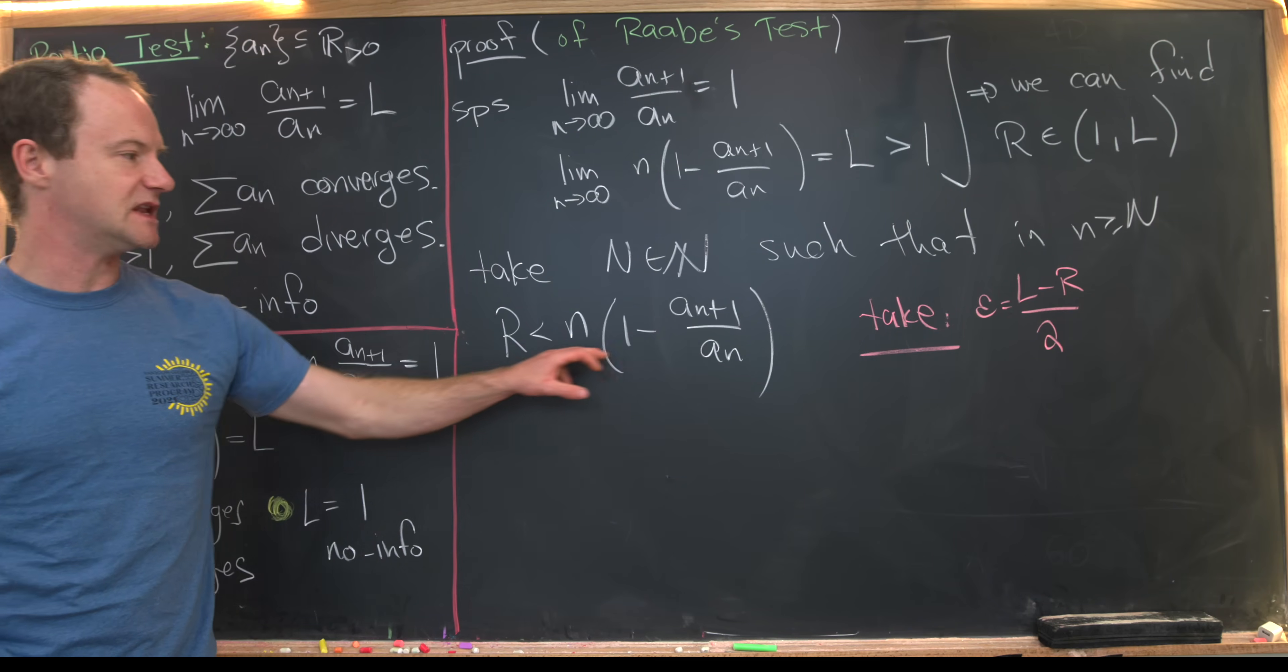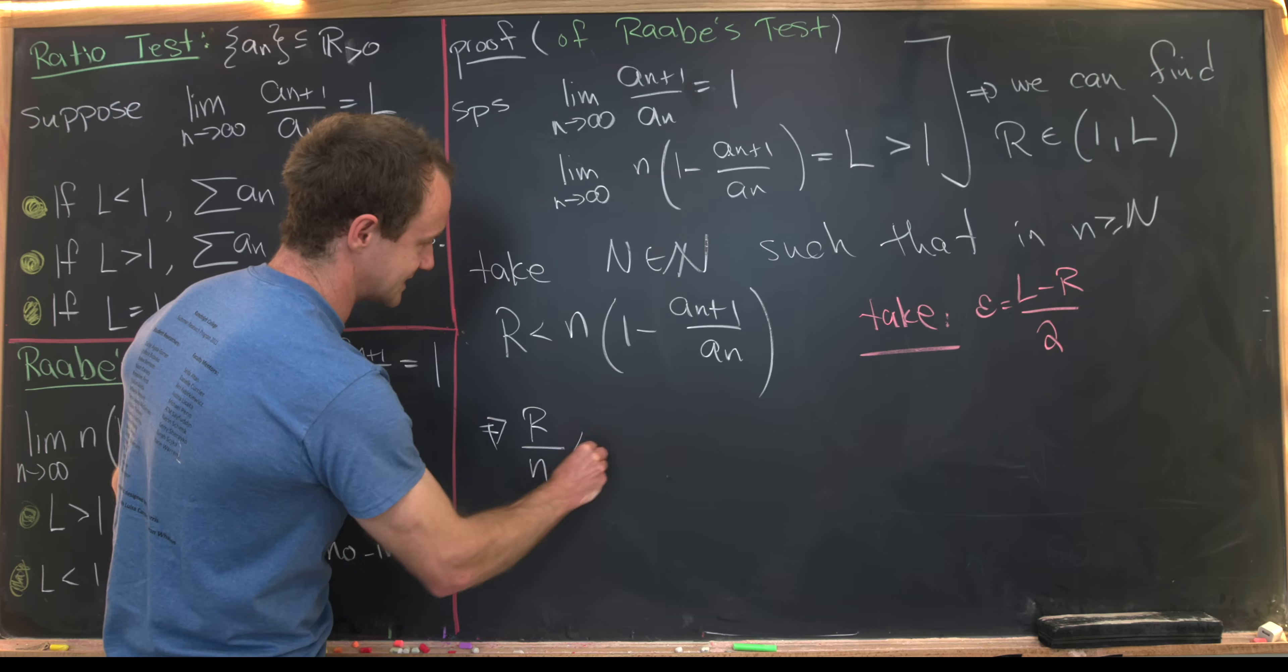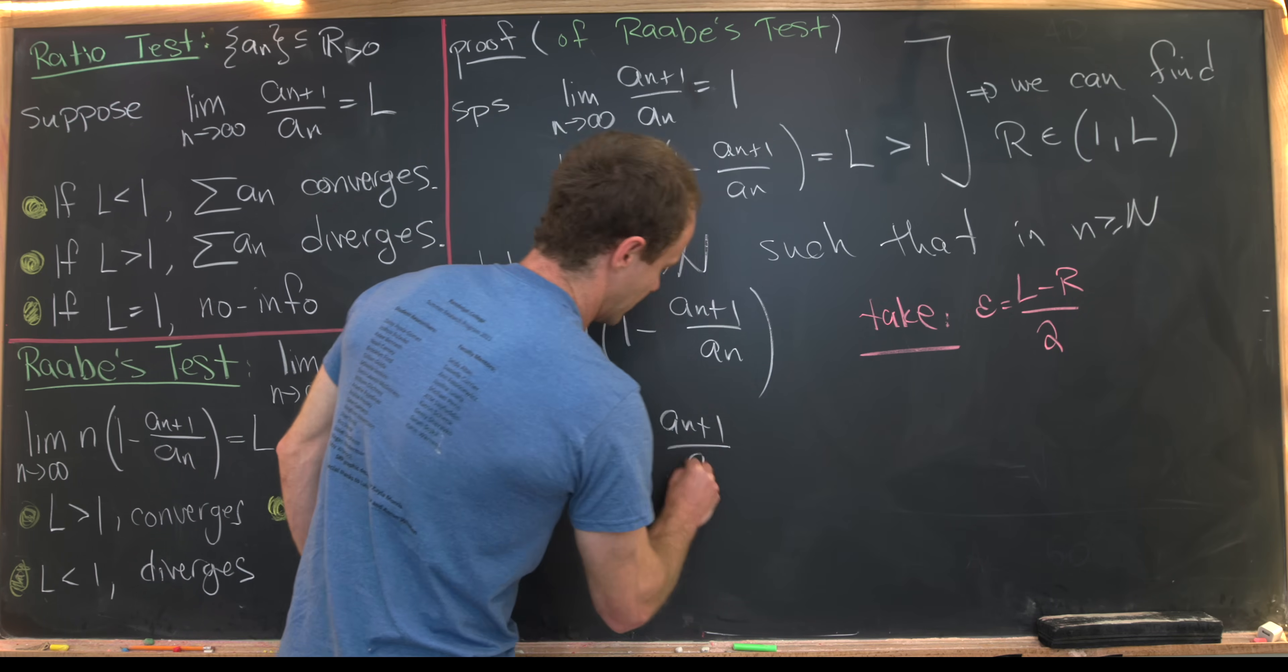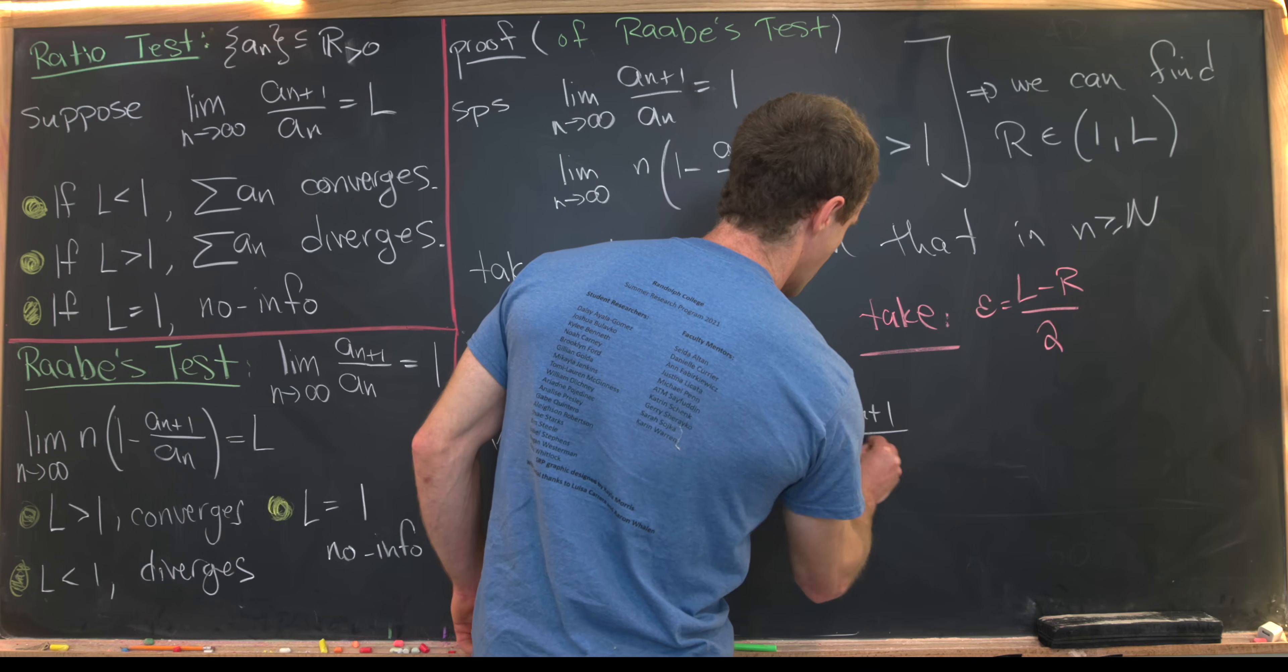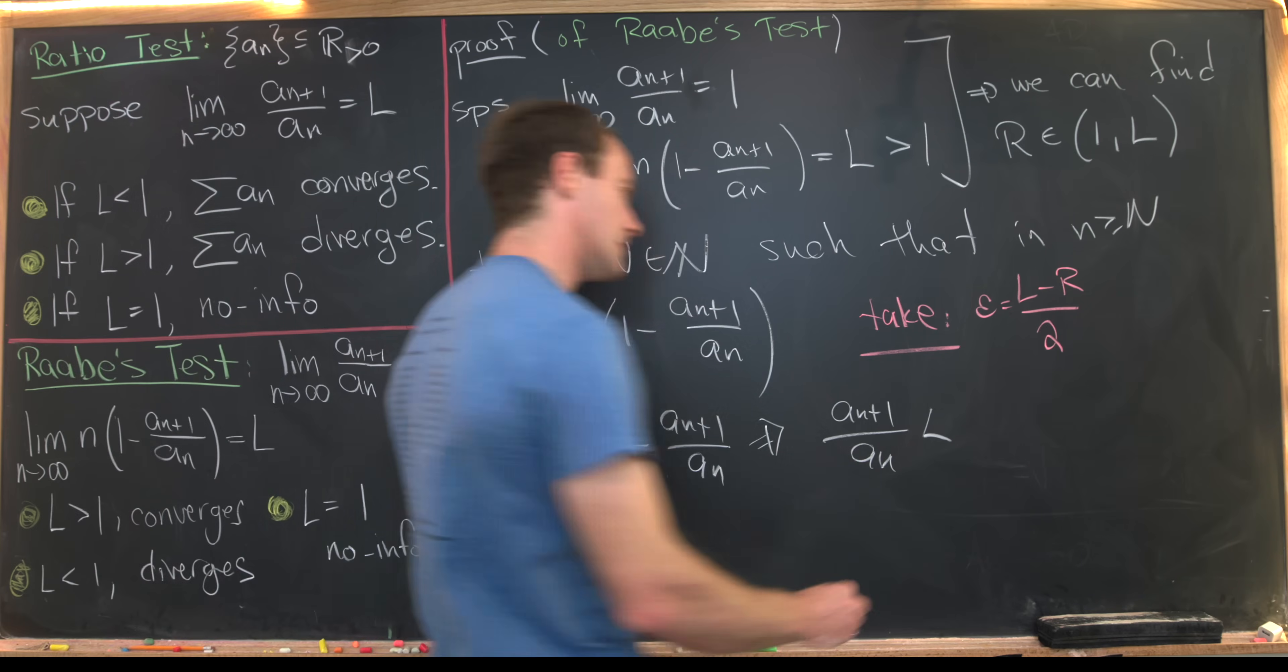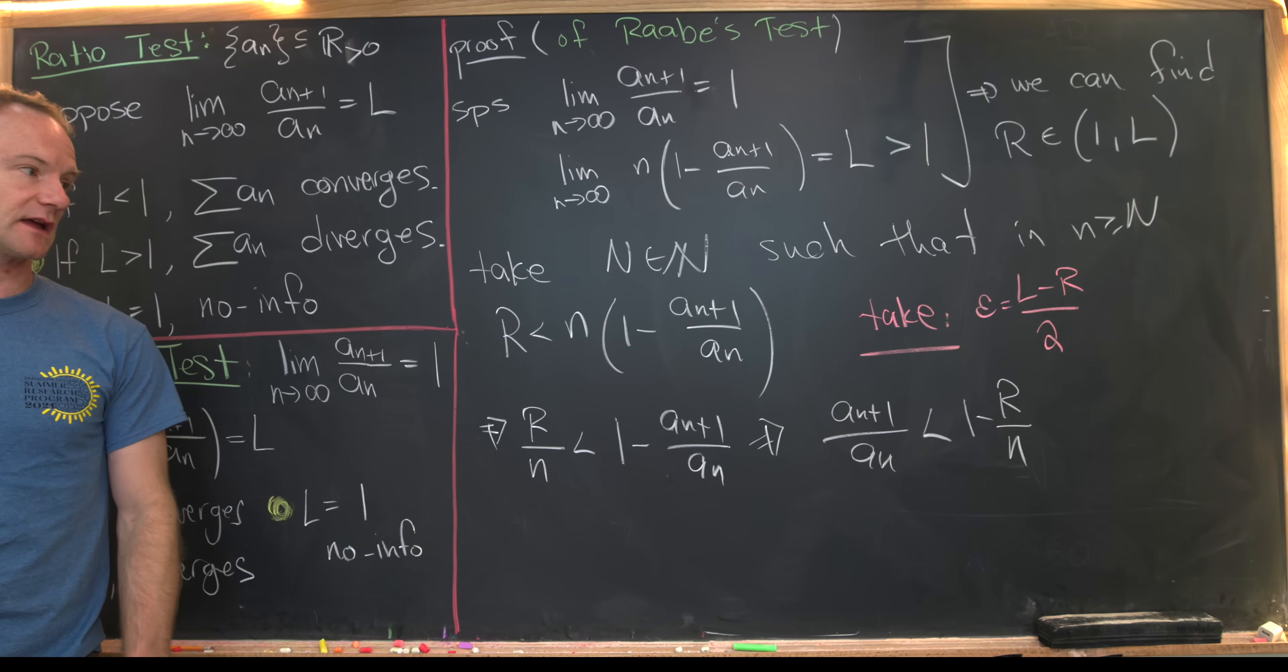Okay, so now let's do some manipulation on this inequality. So let's first notice that this tells us that we have r/n is less than 1 - a_{n+1}/a_n. But now we can rearrange this to have a_{n+1}/a_n less than 1 - r/n. Okay, so again, that's just from rewriting this very slightly.